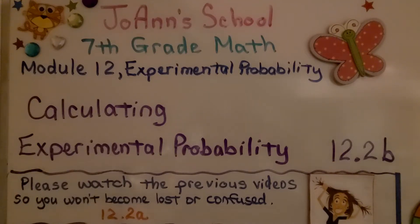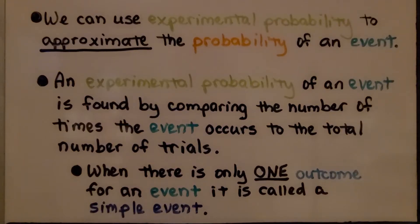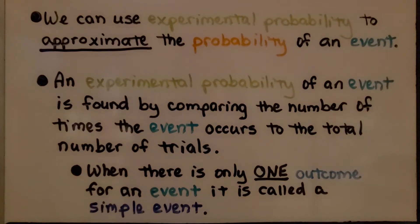We're at Lesson 2.2b, Calculating Experimental Probability. We can use experimental probability to approximate the probability of an event.